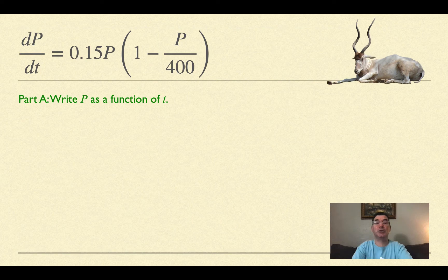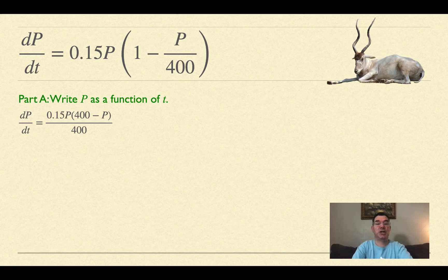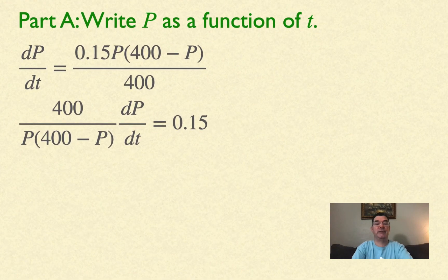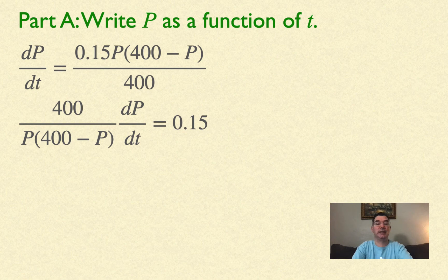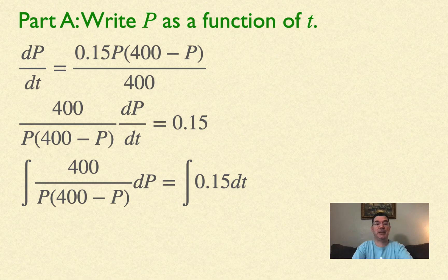To write P as a function of t, I change 1 to 400/400, then multiply by 0.15P. I moved everything with P to the left and kept 0.15 on the right. Now I integrate both sides, adding dp on the left and dt on the right.